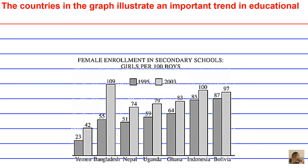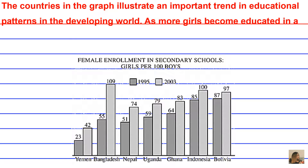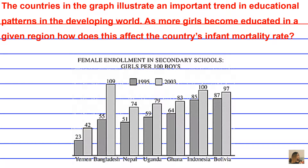The countries in the graph illustrate an important trend in educational patterns in the developing world. As more girls become educated in a given region, how does this affect the country's infant mortality rate? For those who need the technical definition of infant mortality rate, this information is geared more towards medical, MCAT, and public health students who need to be familiar with epidemiology and demographics in precise detail.